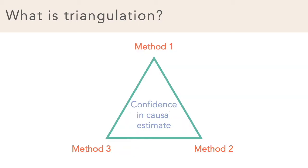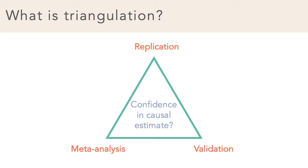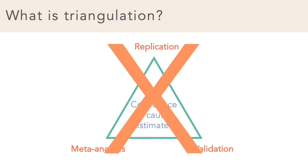The term is also used to describe an approach in qualitative and quantitative research. It involves obtaining more accurate or reliable answers to research questions by comparing results from two or more different methods. In epidemiology, we're used to integrating evidence through independent replication, validation, systematic review, and meta-analysis — comparing or combining results from the same study design under the assumption that they are all unbiased and estimating the same underlying causal effect. But this is not triangulation.